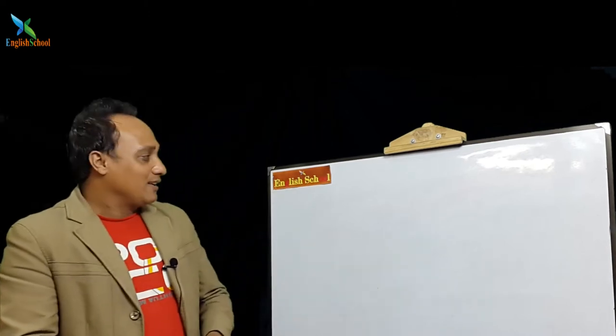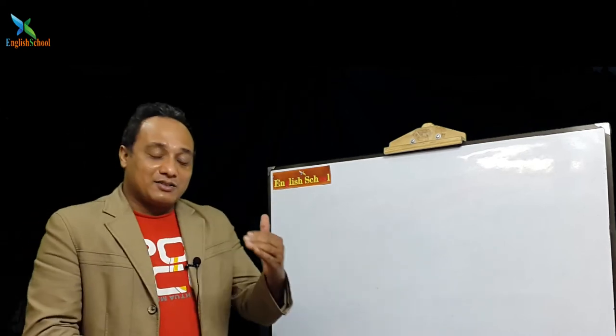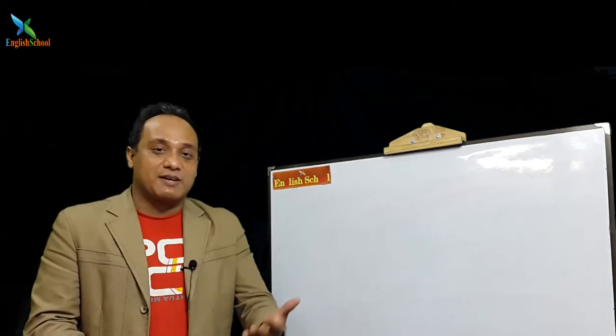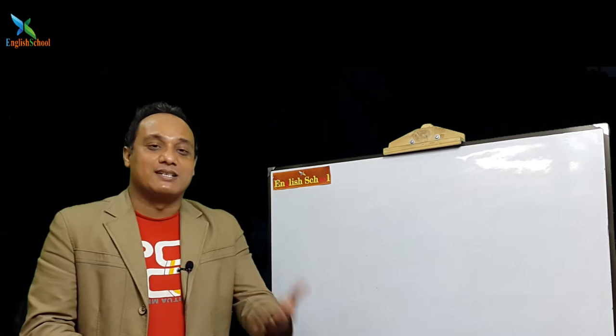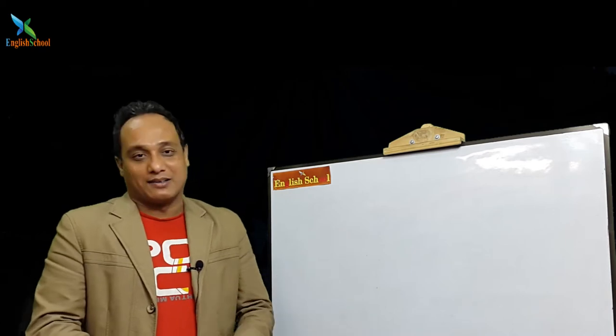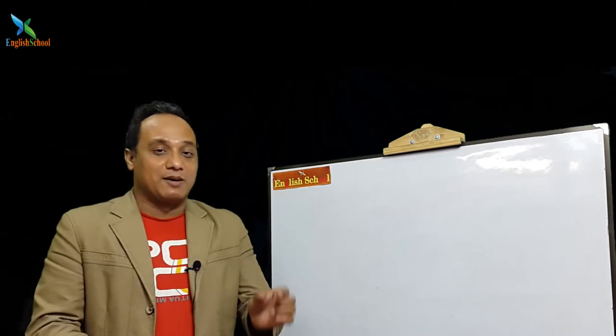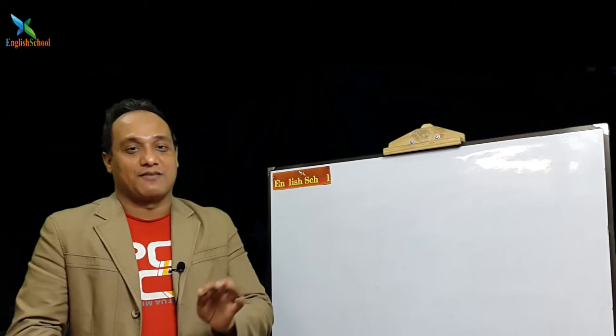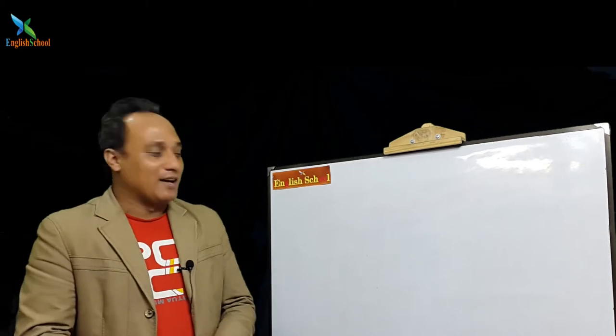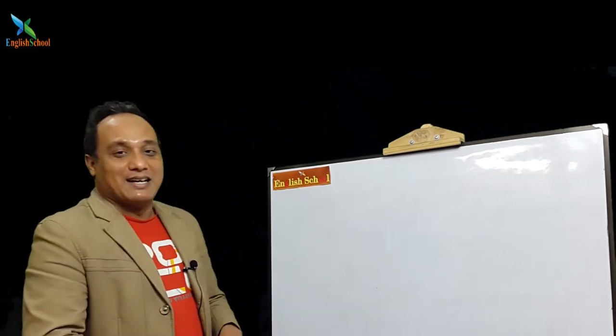So let's see when we get confused between the 'to be' verb and the 'to do' verb. For example: I am a student. Let's practice these kinds of sentences.